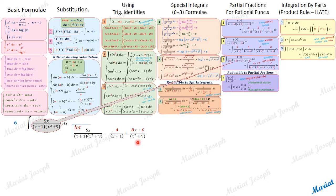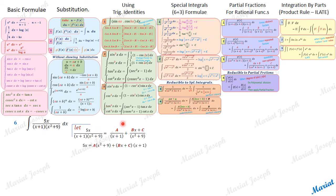Corresponding to the second degree non-splittable factor, take a first degree polynomial in the numerator. We need to calculate the values of A, B, and C. For that, let's take the LCM on the RHS. Once you take the LCM, the denominators from either side cancel, so we equate only the numerators: 5x = A(x²+9) + (Bx+C)(x+1).